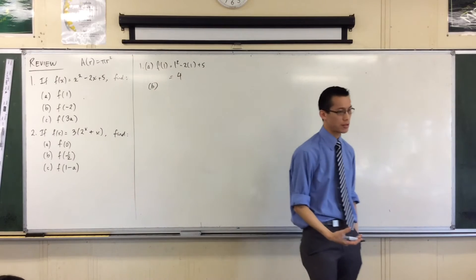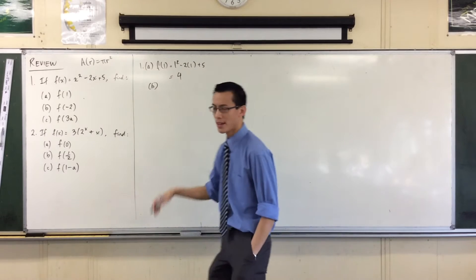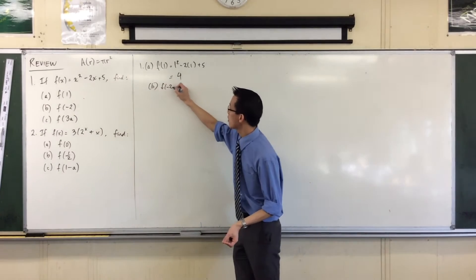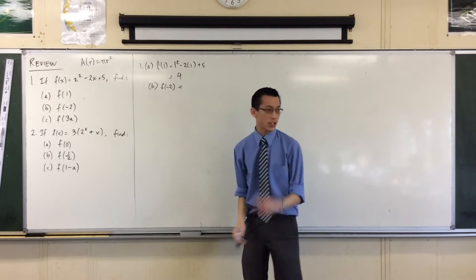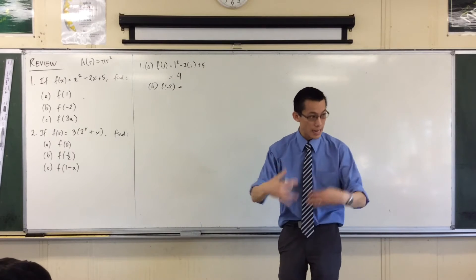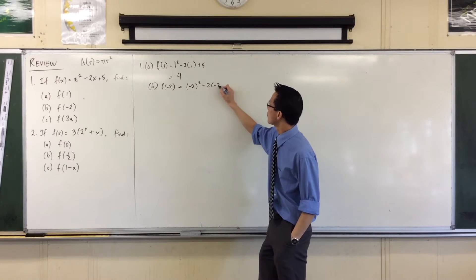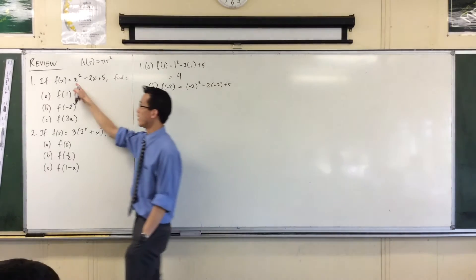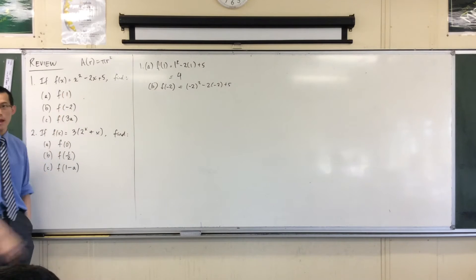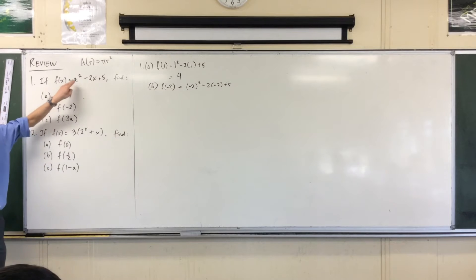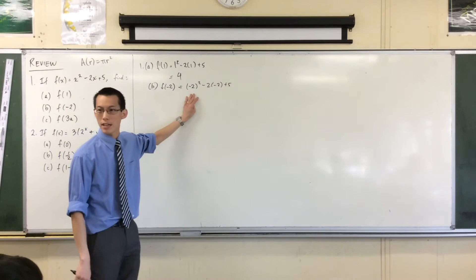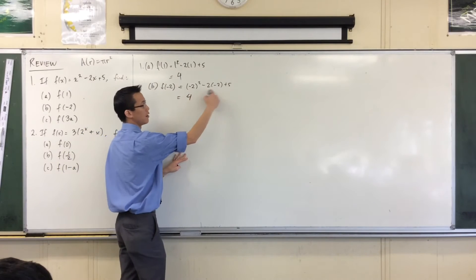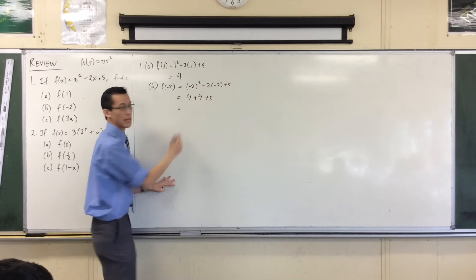I've particularly chosen part b because when you've got negative numbers in there, these follow the same rules as before but there are some easy traps to fall into. I'm going to evaluate f of negative 2. Just like before, I put each number in with brackets to help me recognize the classic error: students look at x squared and write minus 2 squared as negative 4. But in fact the negative sign also gets squared — it's negative 2 times negative 2, which gives 4. There are two negatives, so that's 4, plus another 4, plus 5.